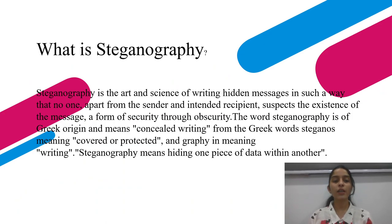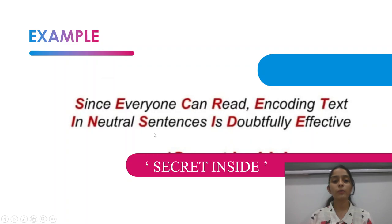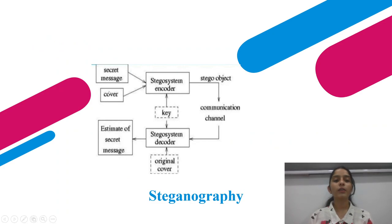So what is steganography? Steganography is a Greek word where 'stegnos' means covered or protected and 'graphy' means writing. So basically steganography means hiding one piece of data within another. For example, if you take the first letters of a particular sentence, they can form a meaningful word like 'secret inside.' This is an example of text steganography.